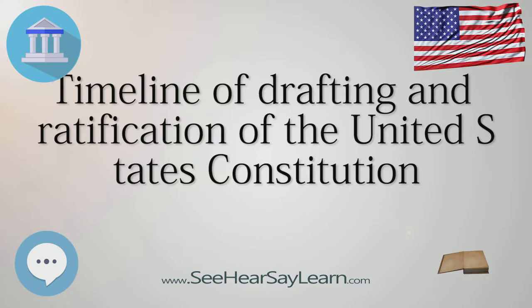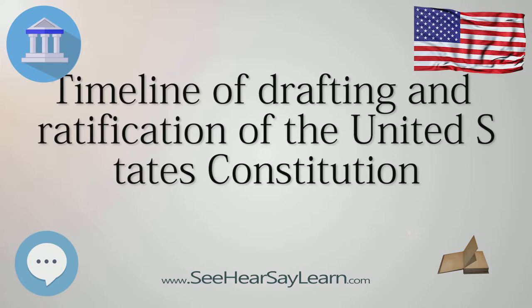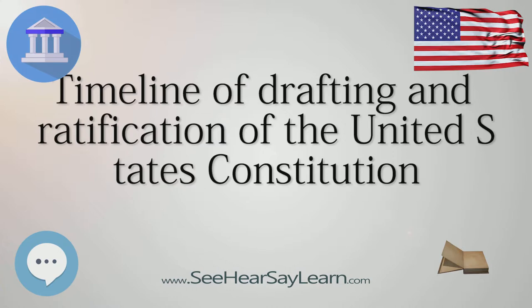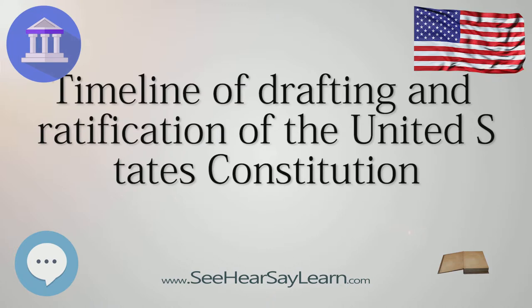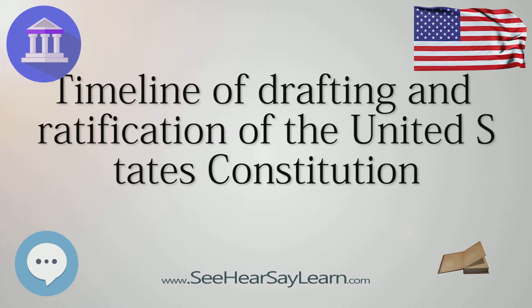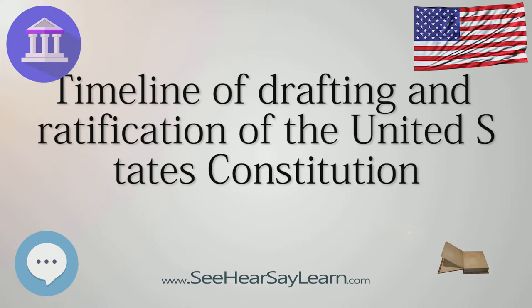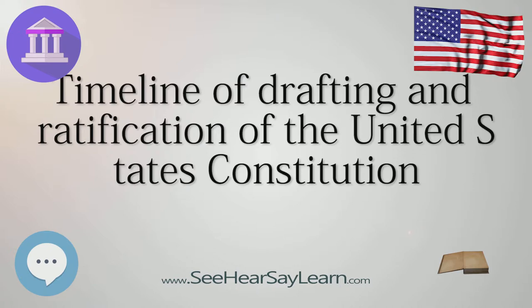November 20: Ratifying Convention Begins in Pennsylvania. December 3: Ratifying Convention Begins in Delaware. December 7: Delaware becomes the first state to ratify the Constitution, 30-0. December 11: Ratifying Convention Begins in New Jersey. December 12: Pennsylvania becomes the second state to ratify the Constitution, 46-23.